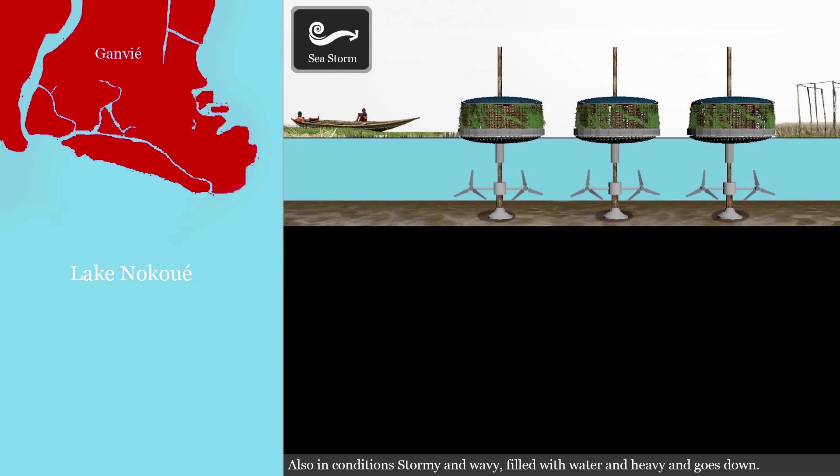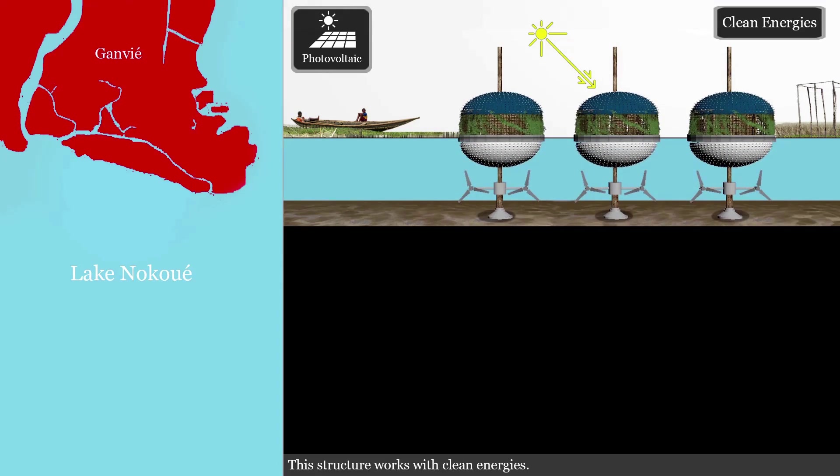In stormy and wavy conditions, the structures fill with water, become heavy, and sink down. This structure works with clean energies.